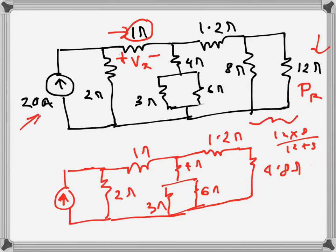Instead of redrawing the whole part, I'll erase parts of it and update it. Now these two — 1.2Ω and 4.8Ω — are in series, so we can replace them with a single resistance of 1.2 plus 4.8, which equals 6Ω.